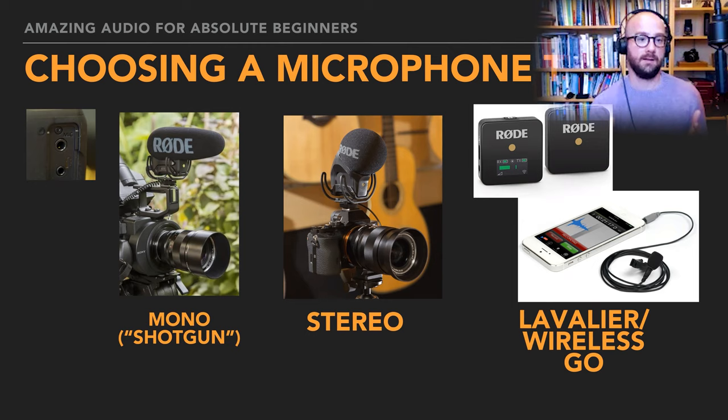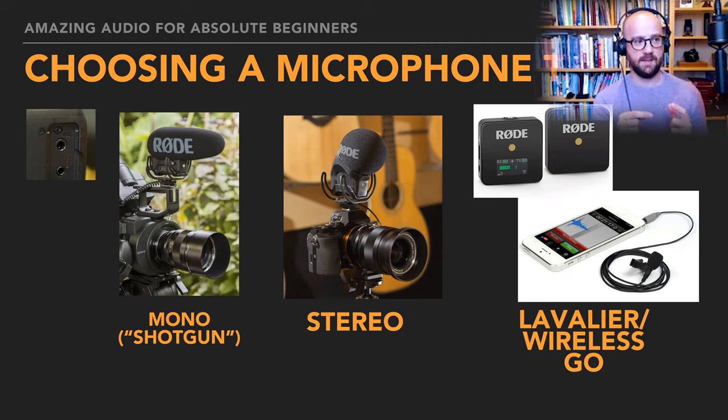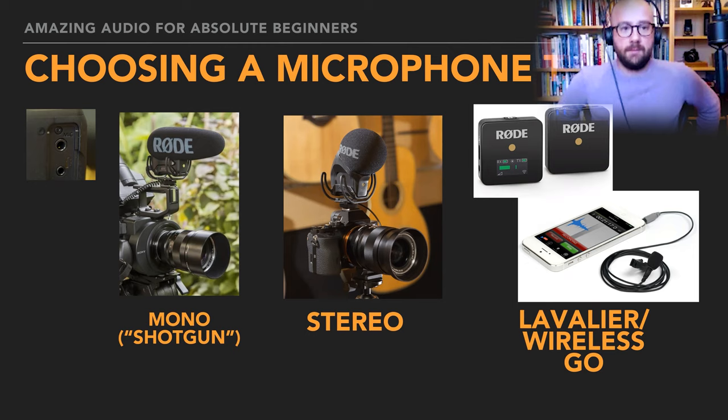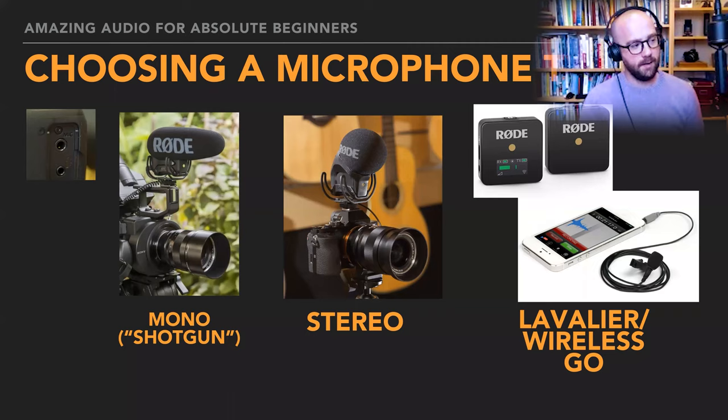There are manufacturers like Fuji that have put 2.5mm jacks on some cameras — you can still use other solutions with those, just get an adapter that converts from 2.5mm to 3.5mm. There's nothing magic about 2.5mm, but just bear in mind there is a solution. Basically there are three choices.